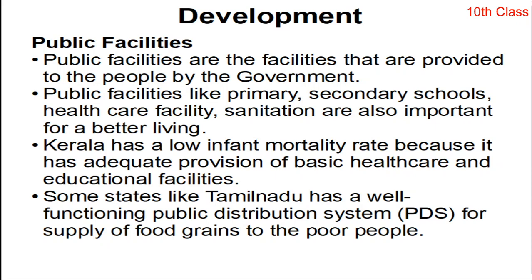Public facilities are the facilities that are provided to the people by the government. Today we all have welfare states. Governments provide several facilities to the people because all governments today are democratic. A democratic government sees the welfare of the people and provides different comforts and facilities. It is the responsibility of the government to provide these facilities, which include education — primary and secondary schools — and healthcare.